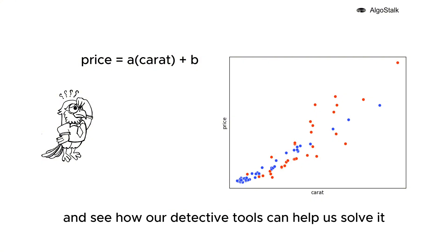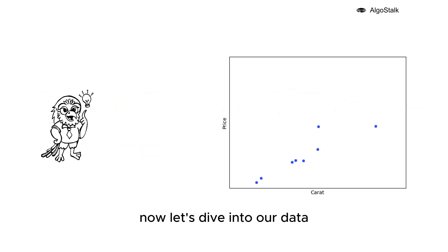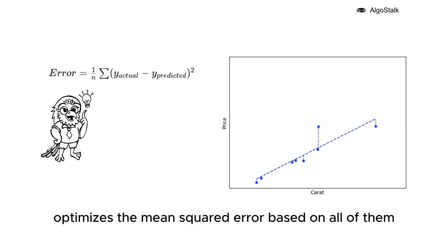Let's dive into the case and see how our detective tools can help us solve the problem with linear regression. Now let's dive into our data. First I'll select eight random data points from our dataset and fit a linear line through them. We can visualize the error for each of these points as the cost function of linear regression optimizes the mean squared error based on all of them.